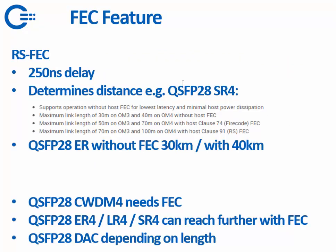FEC also determines the usable distance. For example, for a QSFP28 SR with FEC you can run it to 70 meters on OM3, and without FEC only 30 meters. This is also seen with the QSFP28 ER — the 40 kilometer version: without FEC it reaches 30 kilometers, and with FEC it reaches 40 kilometers.